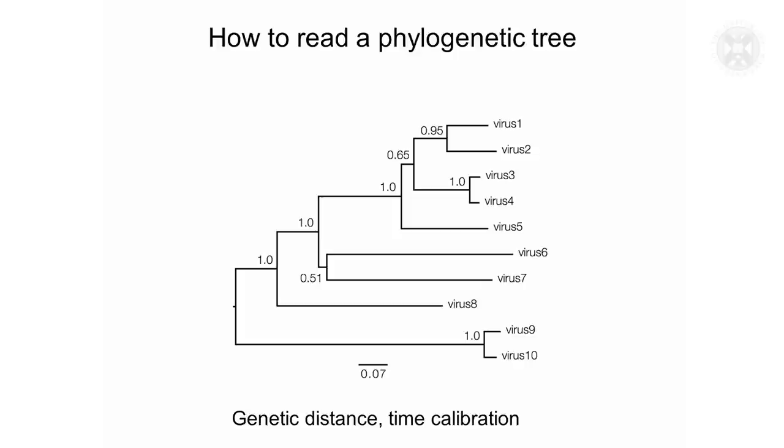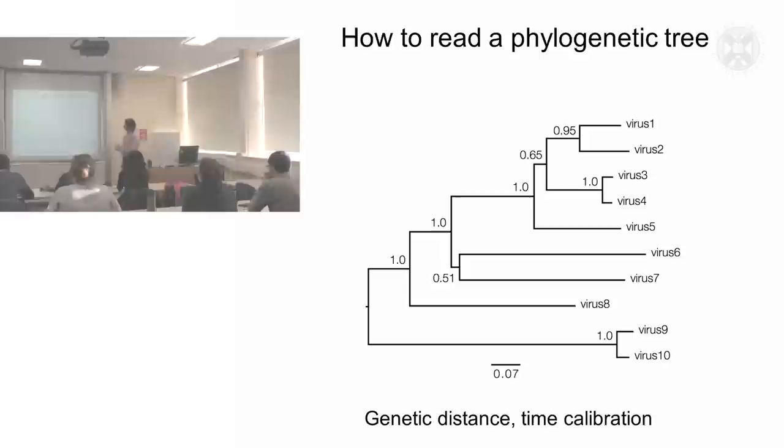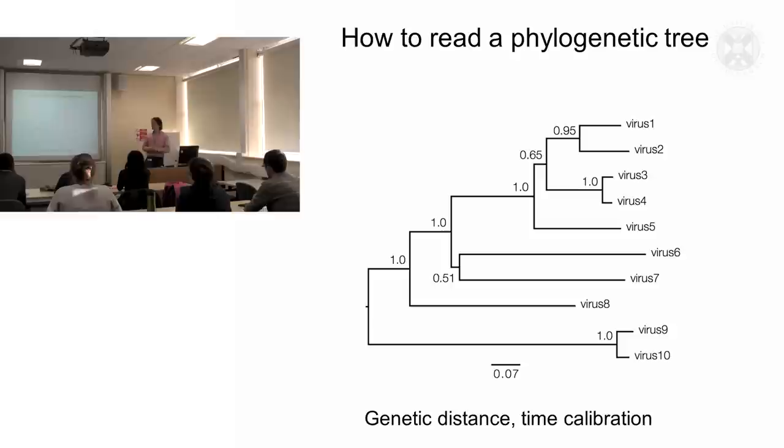This is a phylogenetic tree based on those viruses, the virus sequence alignment that we saw in the last slide. So what can we get from the phylogenetic tree? We see these branches, the length of these branches represents genetic distance. Going horizontally we can see that these viruses here, viruses 9 and 10, are more distantly related to all of the other viruses. So it's the length of the horizontal lines which is important in varying genetic distance.